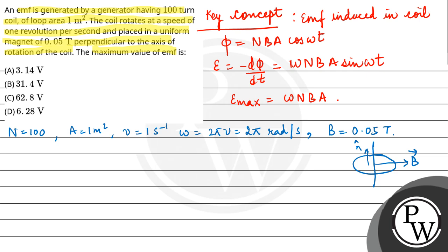So now you have to find the maximum value of EMF, which is ωNBA. The value of ω is 2π, into N which is 100, into B which is 0.05, into A which is 1. So that would be equal to 2 times 5 times π, which equals 31.4 volts. So the final answer is option B.